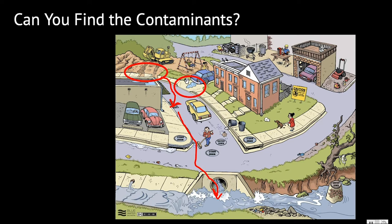Roofs can add toxic metals such as copper and arsenic to stormwater. Here's some garbage, and there's a lawnmower with gasoline — an orca whale wouldn't like to swim in water containing garbage or gasoline. It looks like someone has applied pesticides or fertilizers on their lawn, and these contaminants could also flow into our waterways.